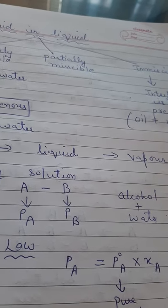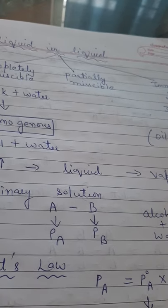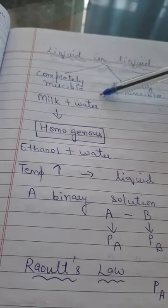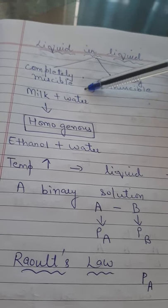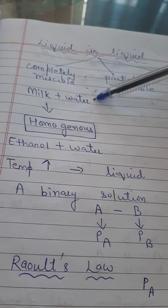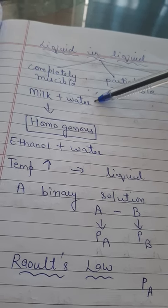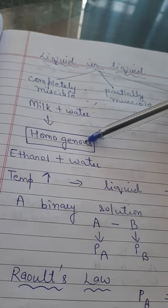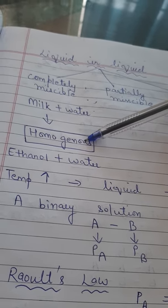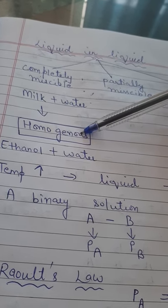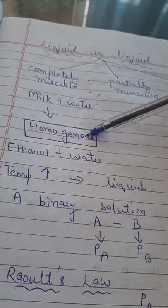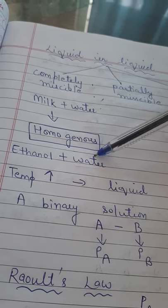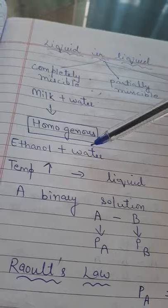Now in this chapter we'll talk about completely miscible liquids. Examples are milk plus water mixed together, or ethanol plus water. This category can be considered in the homogeneous category - completely mixed with uniform composition.